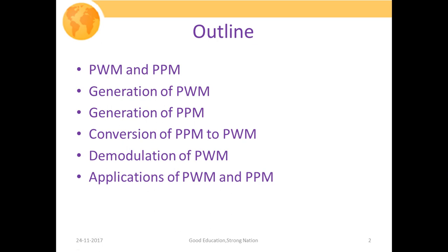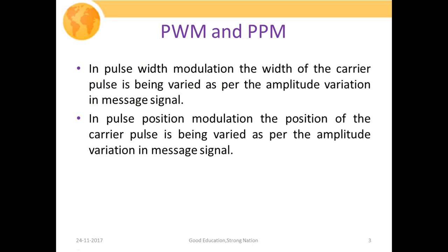In pulse width modulation, the width of the carrier pulse is varied as per the amplitude variation in the message signal. The width or duration of the carrier pulse will be varied as per the amplitude variation in the message signal. If the amplitude of the message signal is increasing, we will get high width or large duration pulses. When the amplitude is low, the pulse width will get reduced accordingly.